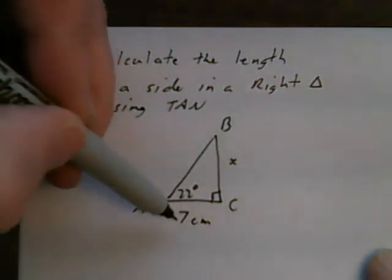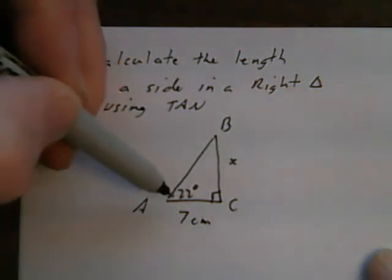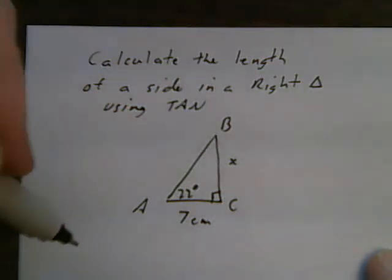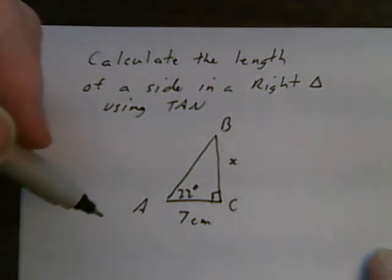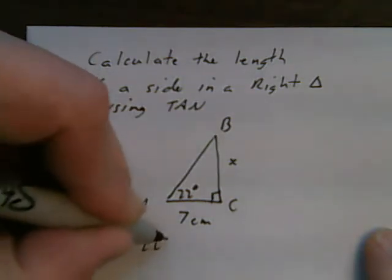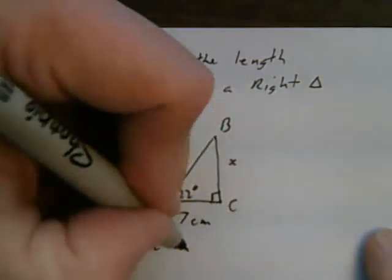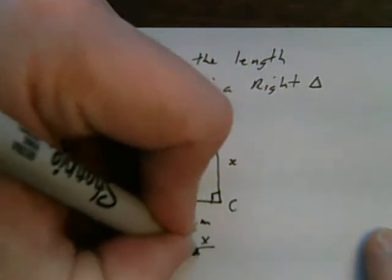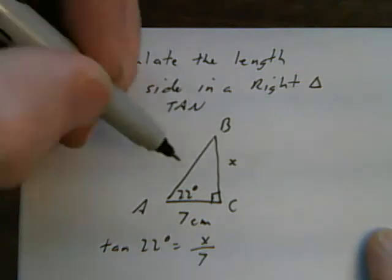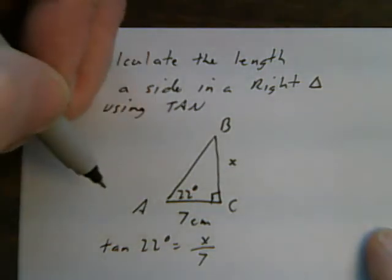Since I have an opposite side and an adjacent side to the angle, that means I'm going to use the tan ratio. So I'm going to set up an expression here and I'm going to say tan 22 degrees equals X over 7, because X is my opposite side and 7 is my adjacent side with reference to 22 degrees.